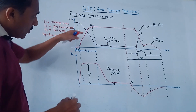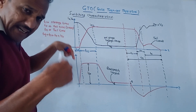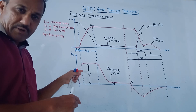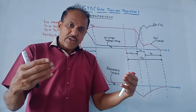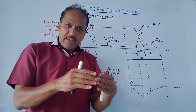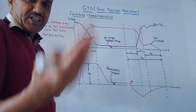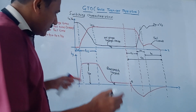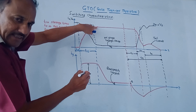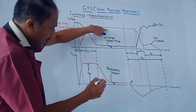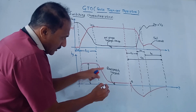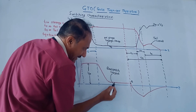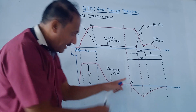During the turn on process, once the GTO is turned on and anode current reaches its latching value, manufacturers suggest that the gate current should not be removed entirely. A small, continuously applied gate current remains — this is called the back porch current, shown as a small value on the graph at point A.